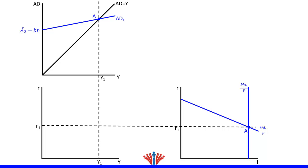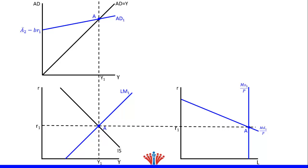In the IS-LM model, R1 and Y1 is the equilibrium point, which we will label as A. Then we will draw the downward IS curve and the upward LM curve to intersect at equilibrium point A. Now the three markets are at equilibrium: the goods market at point A, the money market at point A, and the IS-LM model at point A.